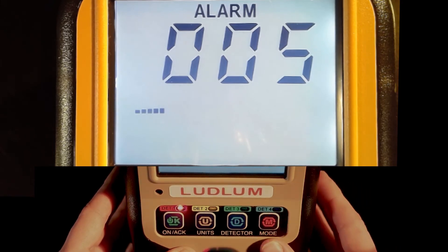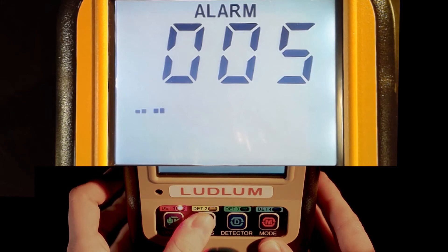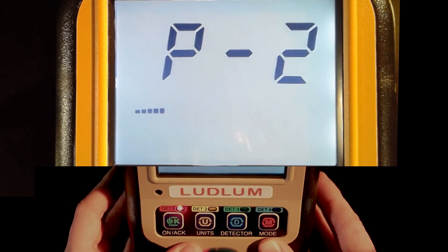Once you are happy with your changes, press and hold the UNITS button. This will save the changes and back up the display to the previous screen. Turn the meter off if desired.